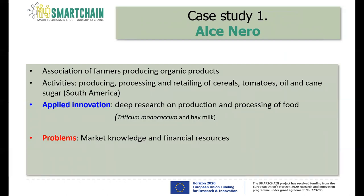I will now present what we identified in our Italian case studies. Alcineiro is an association of farmers producing organic products. Their activities span production, processing, and retailing of cereals, tomatoes, oil, and cane sugar. An innovation they consider significant is their research on antique grains and the way they process food. However, there are important problems: lack of market knowledge — they are researching certain products but don't know if the market is open for them — and limited financial resources, which are crucial for conducting good research.